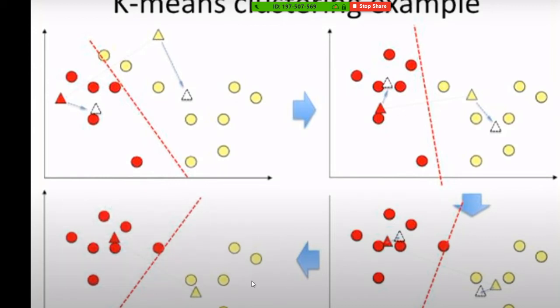K-means is unsupervised and very simple, but very efficient - one of the most popular clustering methods. I have developed one clustering method myself based on particle swarm optimization. But this unsupervised learning is one type. Another very popular one is supervised learning.